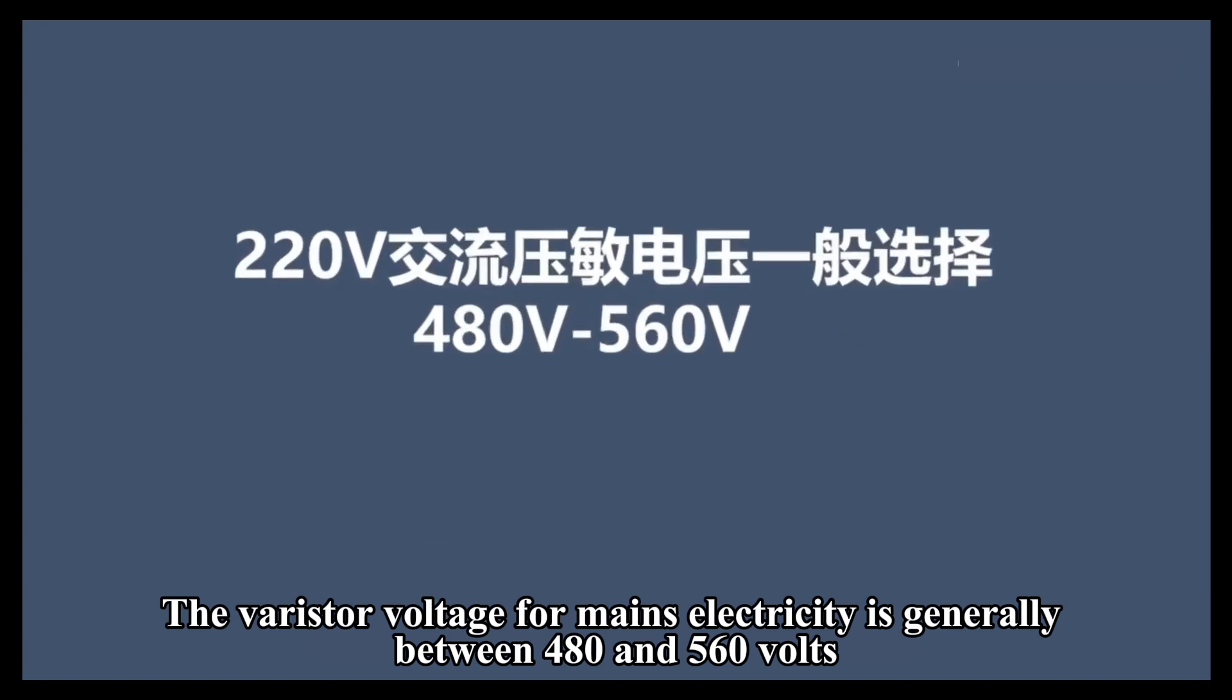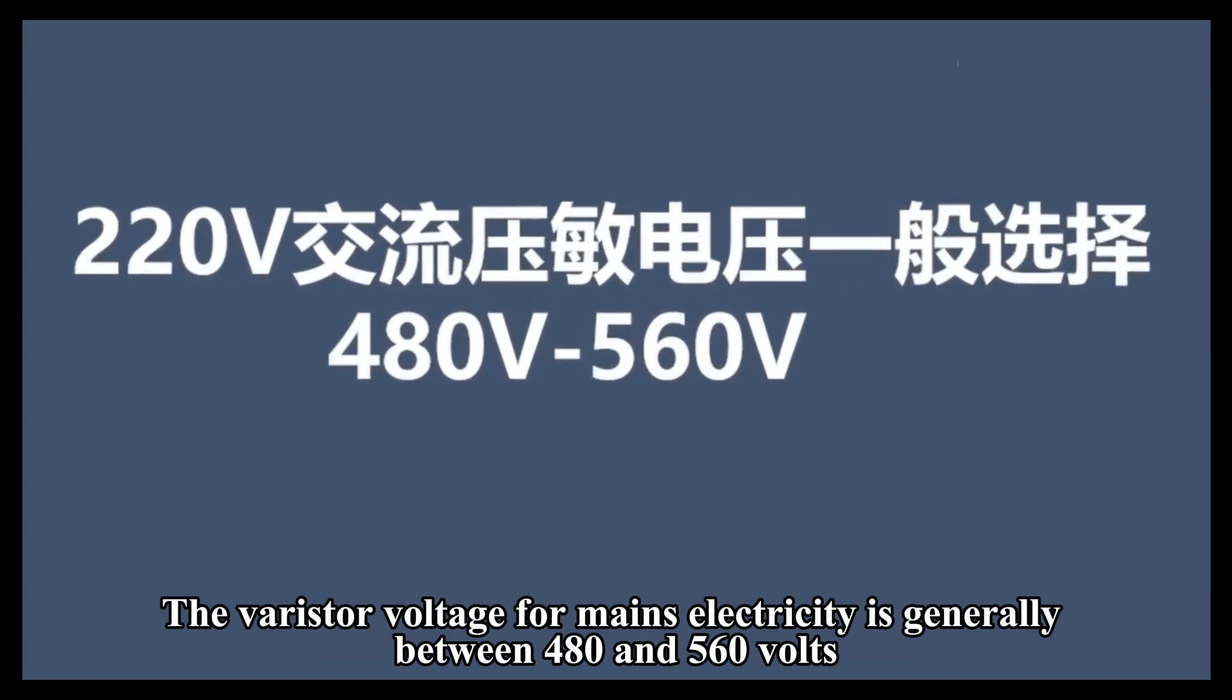The varistor voltage for mains electricity is generally between 480 and 560 volts.